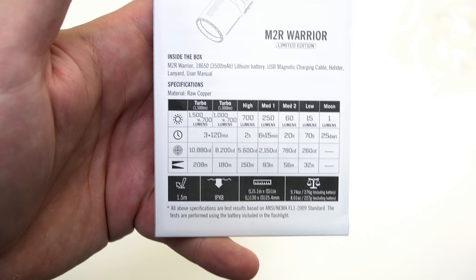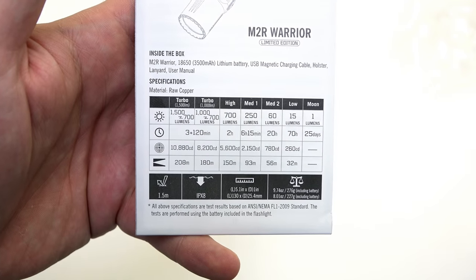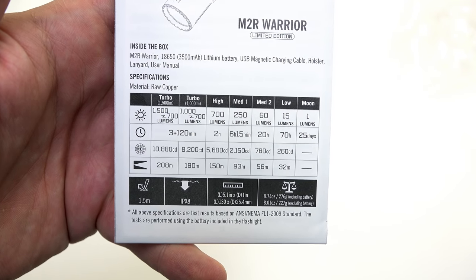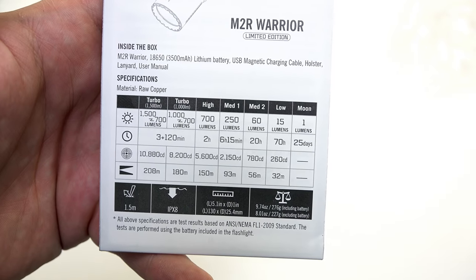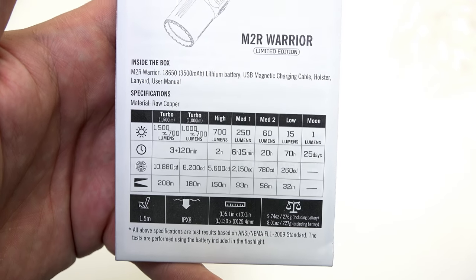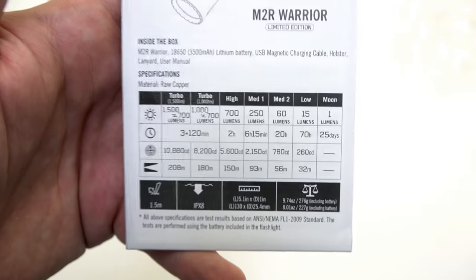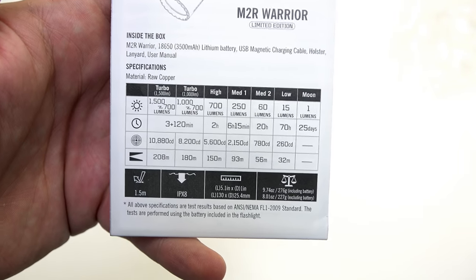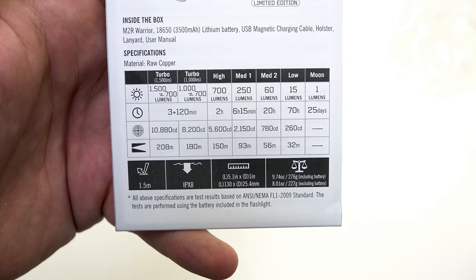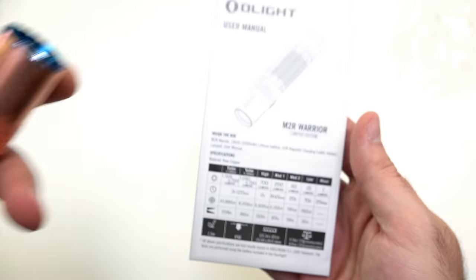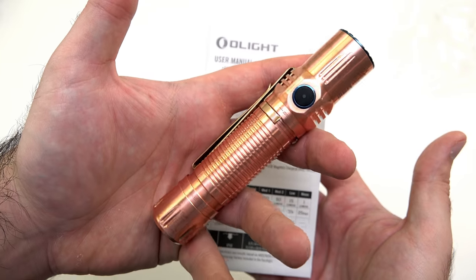The M2R CU continues to offer actually up to seven modes. It has two turbos, high, medium, and then that low, and then you have the moonlight which is the one lumen. You can go from one lumen all the way to 1500 lumens, which I think is pretty awesome. It hits the wide spectrum of different brightness levels that you would need.